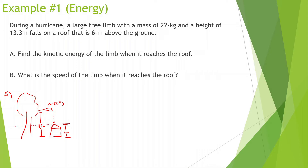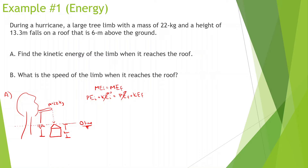The zero line is important when it comes to kinetic energy. We should know that mechanical energy is conserved. So for the tree limb: potential energy initial plus kinetic energy initial equals potential energy final plus kinetic energy final. At the very beginning it has height so it has potential energy, but it doesn't move, so there's no kinetic energy. When it hits the roof it's at the zero line — no height — but it's hitting with a certain speed. So: mgh equals one half mv squared.